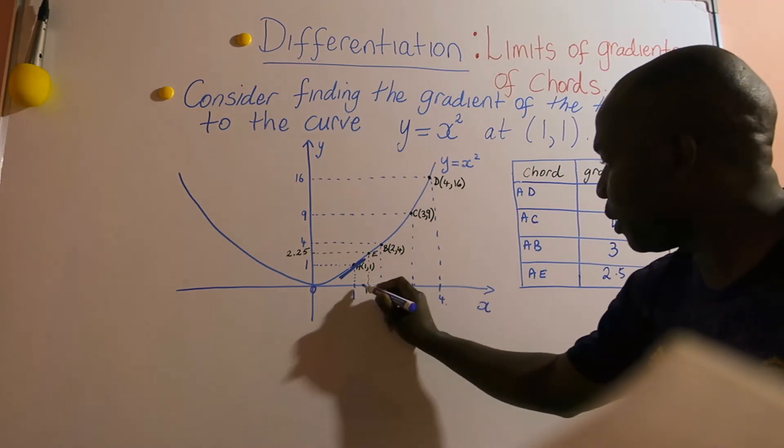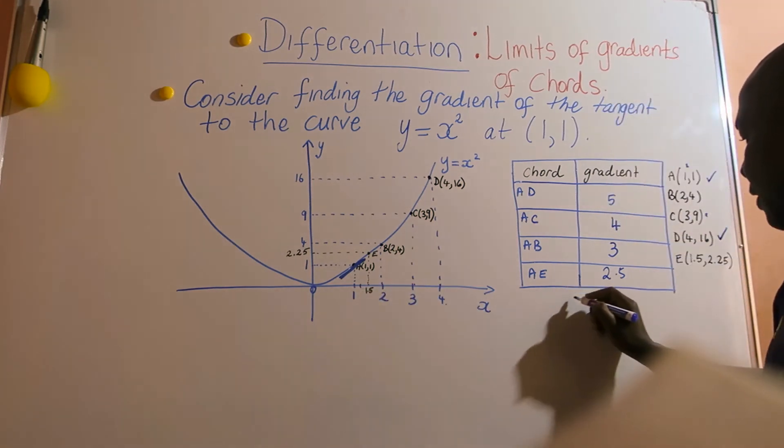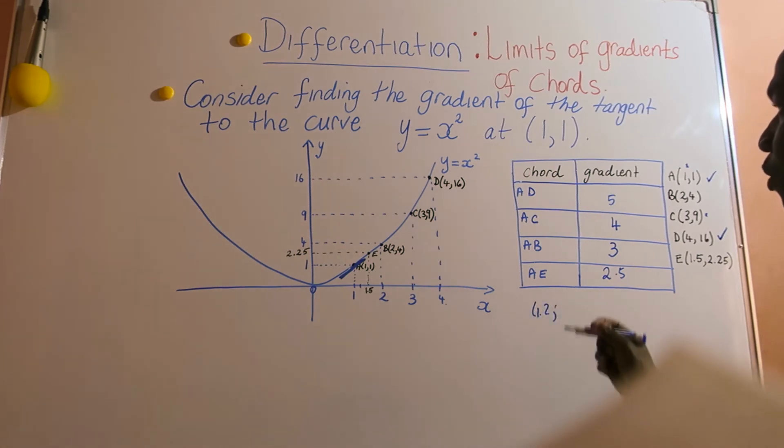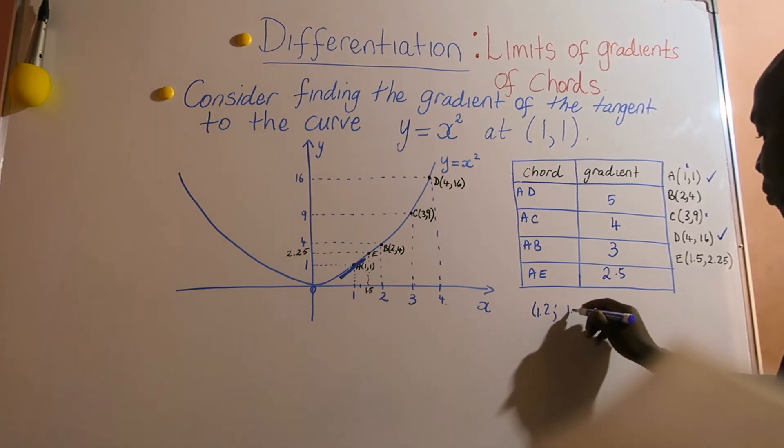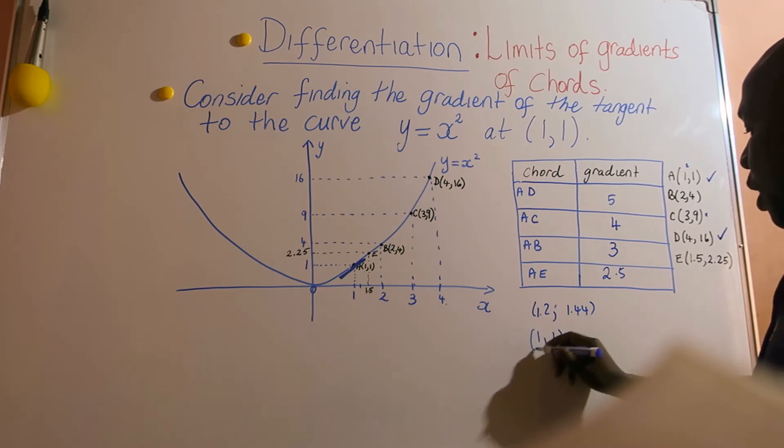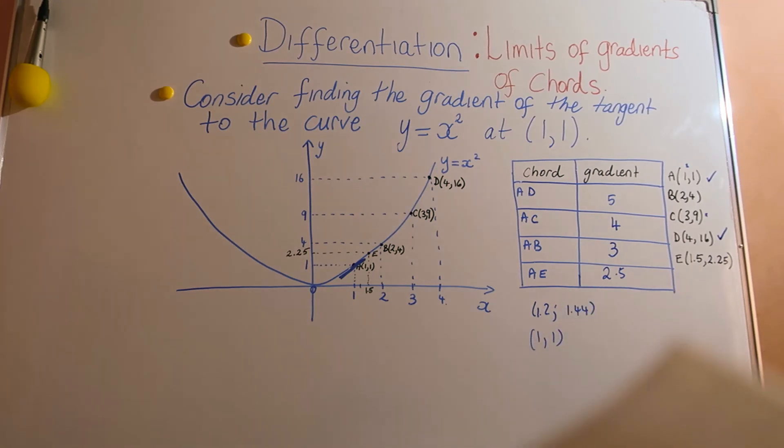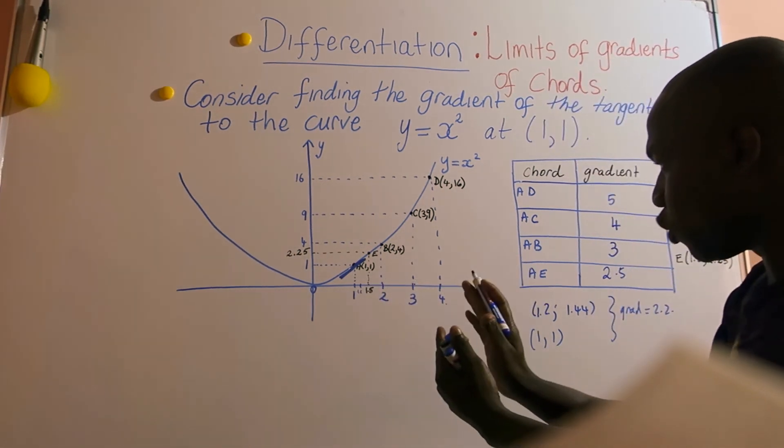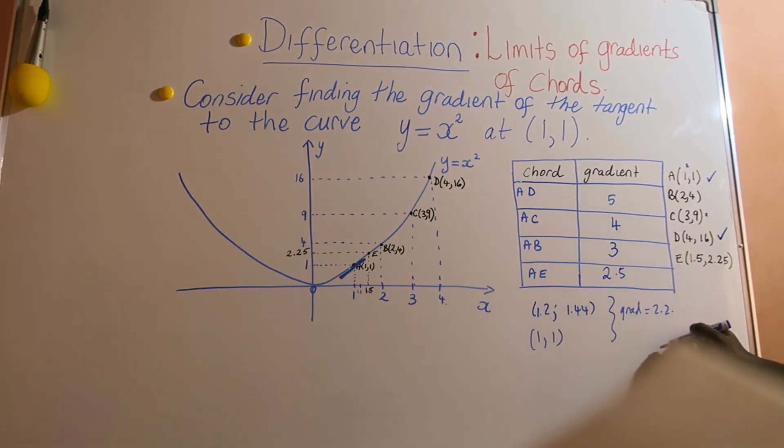You may want to zoom in closer, taking a point which is closer. So take a point, say, what if x is 1.2? The function is x squared, so 1.2 squared would be 1.44. And again using the point A, which is (1,1), so if you find the gradient, you see that the gradient using that point is going to be 2.2.